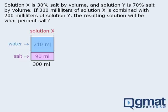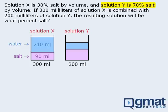Next we have 200 mL of solution Y, which we will also draw with the salt and water separated. The question tells us that solution Y is 70% salt by volume. So if there is 200 mL of solution Y, and 70% of 200 is 140, then we know that there is 140 mL of salt in the solution. This means the remaining 60 mL of the solution must be water.